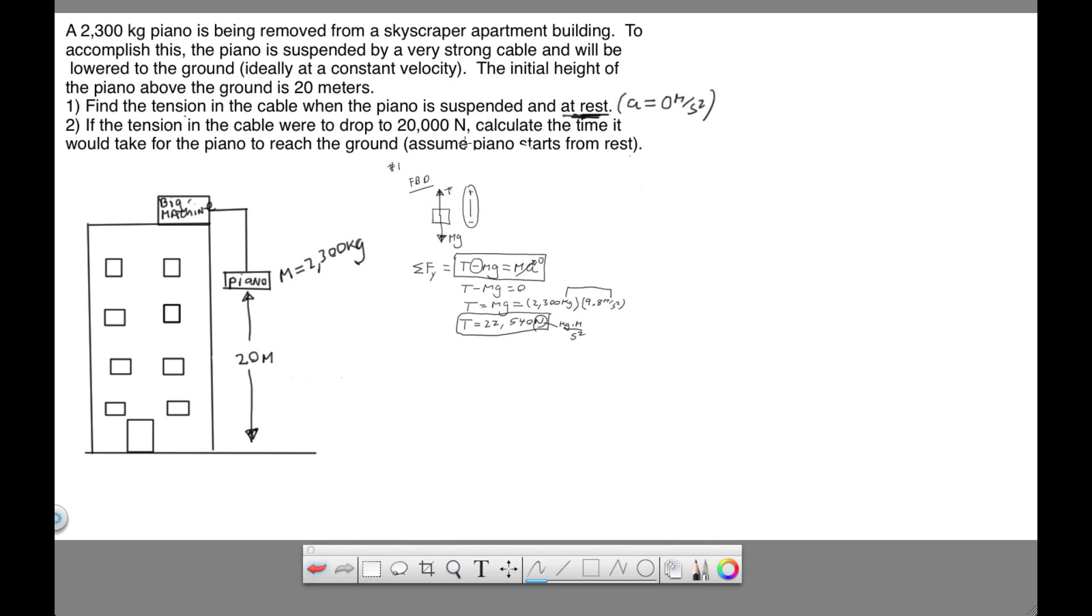The force in the downward direction will be larger than the force in the upward direction. We're asked to calculate the time it would take for the piano to reach the ground following a distance of 20 meters. This is basically a kinematic problem. Here's what we know. We're told that the initial velocity is zero, so right here it says assume the piano starts from rest.